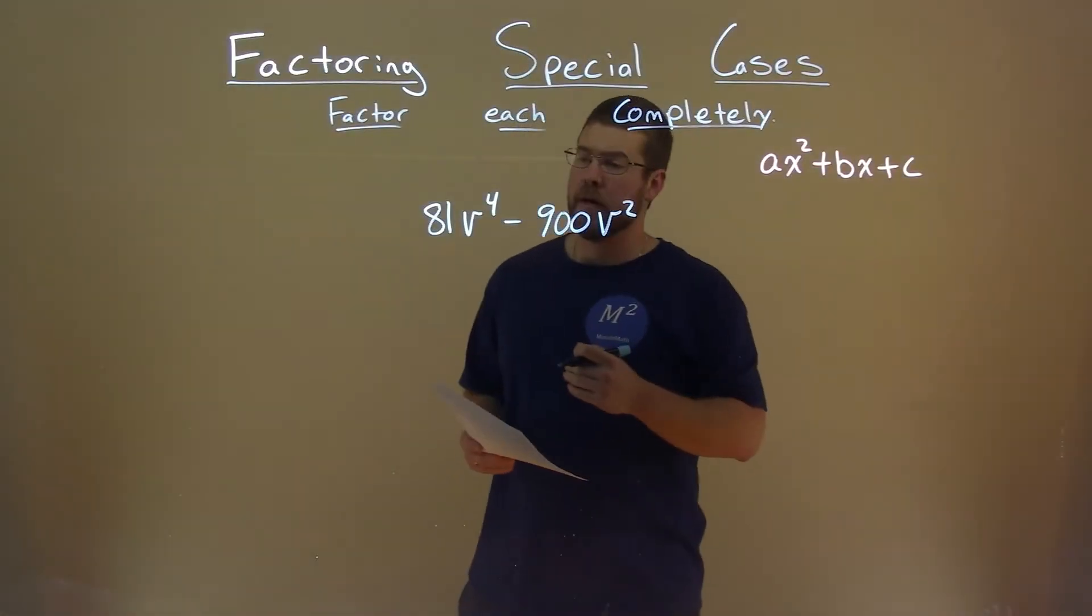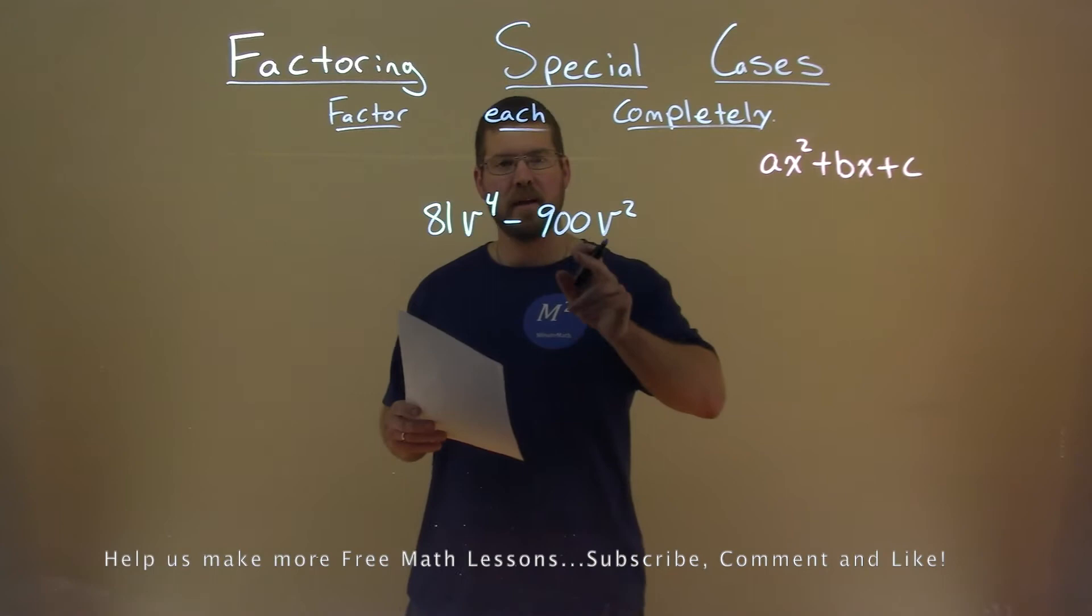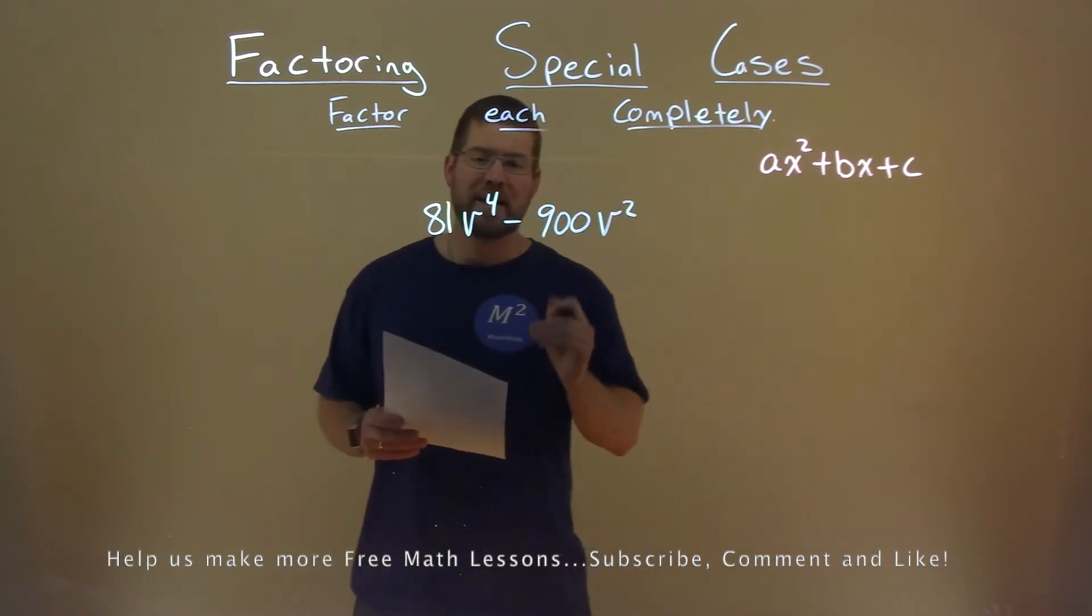We're given this problem right here, 81v to the fourth power minus 900v squared, and we want to factor this completely.